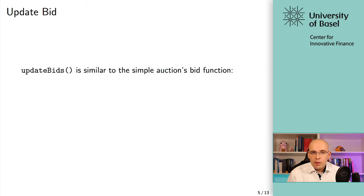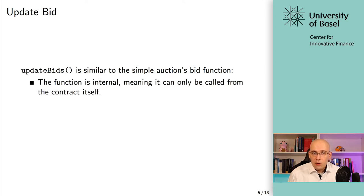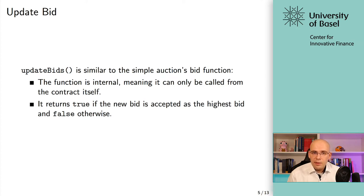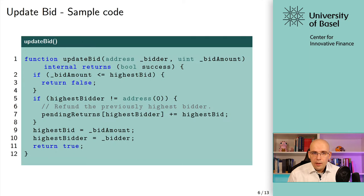`updateBid` is actually quite similar to the simple auction's bid function we saw earlier. The function is internal, meaning it can only be called from the contract itself — it's triggered by another function that uses `updateBid` internally. It returns `true` if the new bid is accepted as the highest bid, and `false` otherwise, giving a result indicating whether we need to update the highest bid.